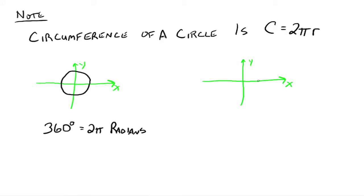What happens if we do halfway around a circle? Well, that's 180 degrees. And how many radians do we go around the circle? Well, if all the way around is 2π, then halfway around is π.